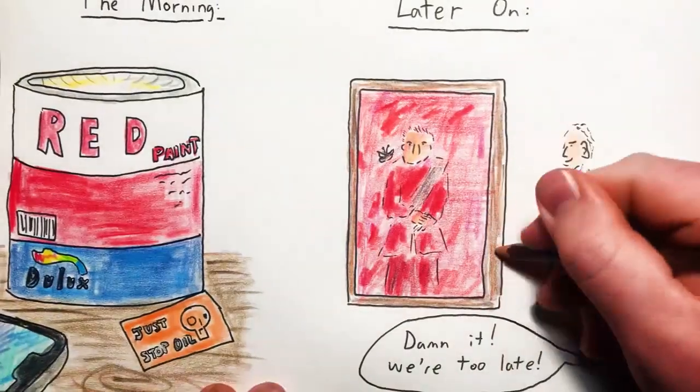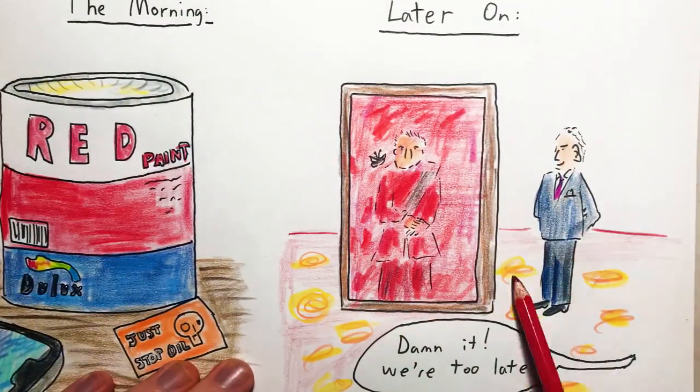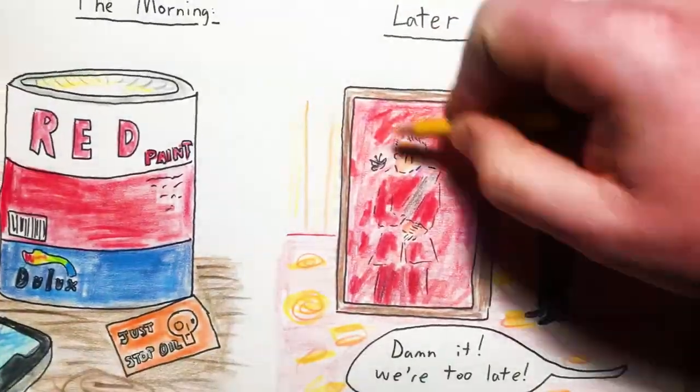And finally, Meghan Markle was in Nigeria and gave a motivational speech to a group of teenage schoolgirls saying, quote, I see myself in all of you. I'm going to be honest, I'm pretty sure she stole that line though from one of Prince Andrew's old chat-up routines.